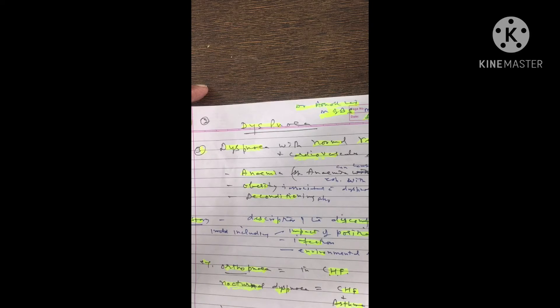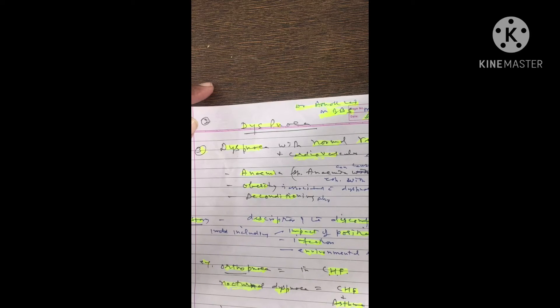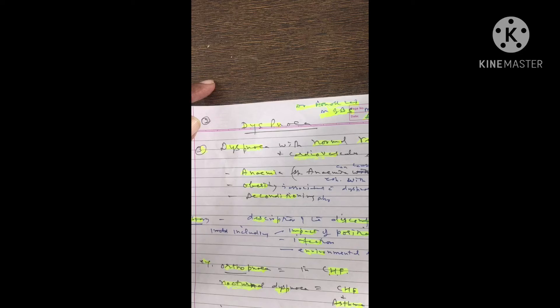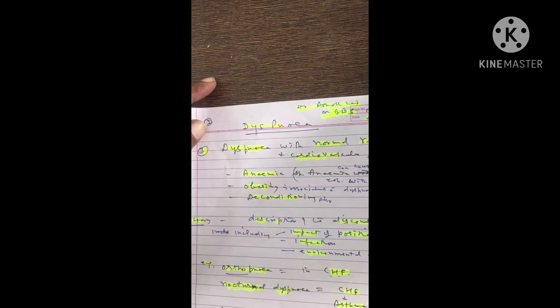Number one is anemia. Anemia can cause dyspnea, especially with exertion. Obesity may also be associated with dyspnea due to high cardiac output, and deconditioning may also contribute.